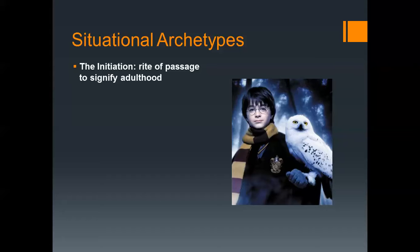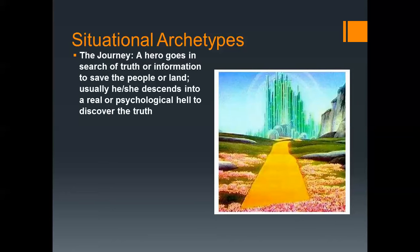The initiation signifies adulthood. Harry Potter had to go through many initiations in his journey to become an adult — he's at Hogwarts. The journey sends the hero in a search of some truth that will help save his kingdom. This is a picture of the yellow brick road leading to the Emerald City. Dorothy, the heroine of the story, has to go on this journey to find the truth.